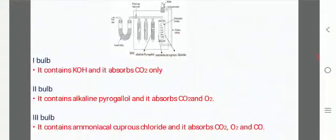Bulb I: It contains KOH and it absorbs CO2 only. Bulb II: It contains alkaline pyrogallol and it absorbs CO2 and O2. Bulb III: It contains ammoniacal cuprous chloride and it absorbs CO2, O2 and CO.